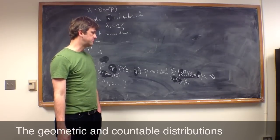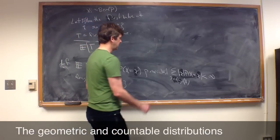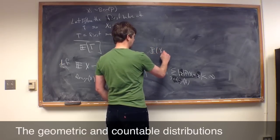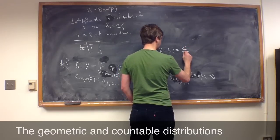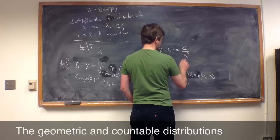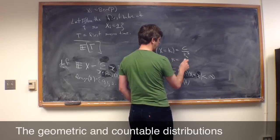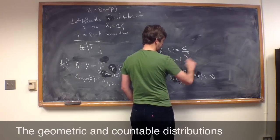All right, so an example of that would be if the probability of X equaling K was equal to some constant over K squared,